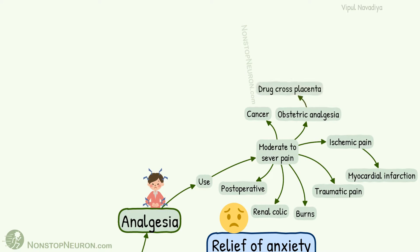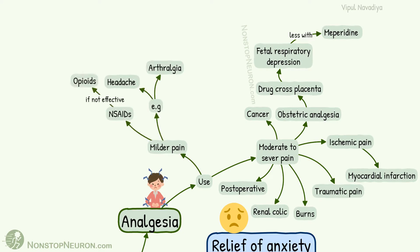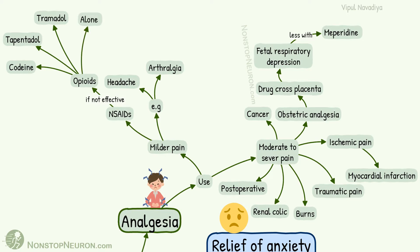When used during labor, morphine may cross the placenta and cause respiratory depression in the fetus. This is less with meperidine. For milder pain like headache and arthralgia, NSAIDs are preferred. If they are not effective, opiates like codeine, tapentadol, and tramadol are used. They can be used alone or in combination with paracetamol.